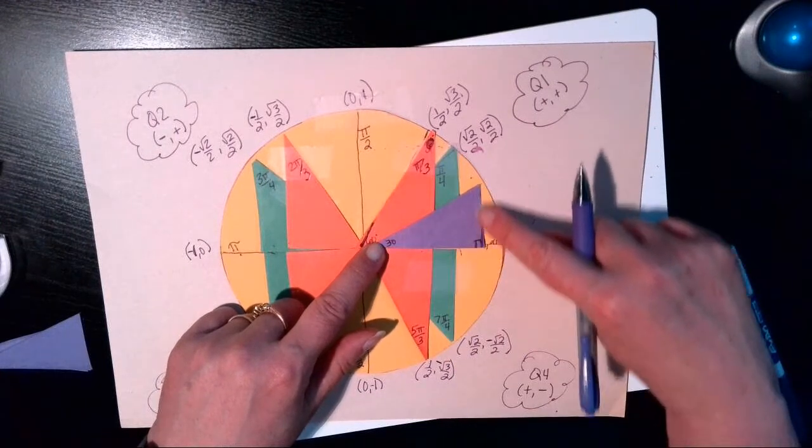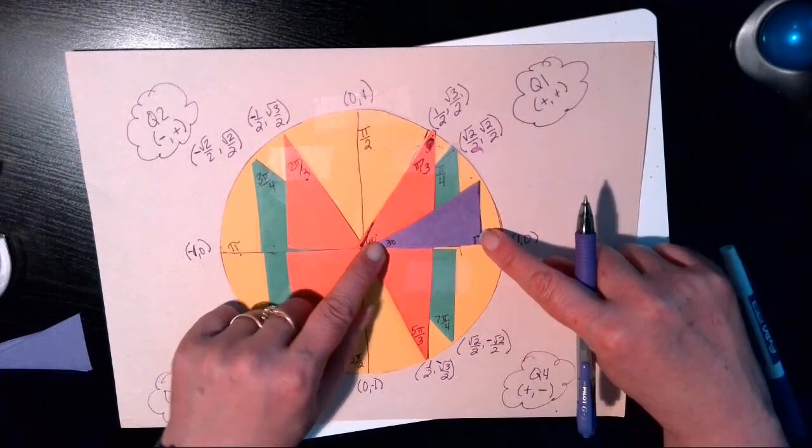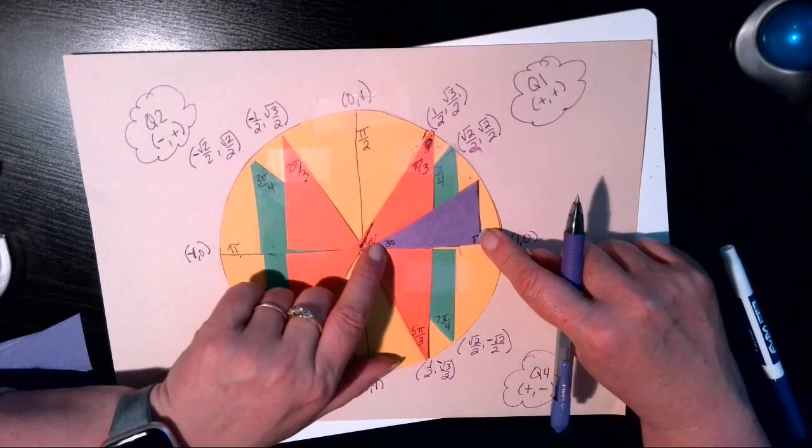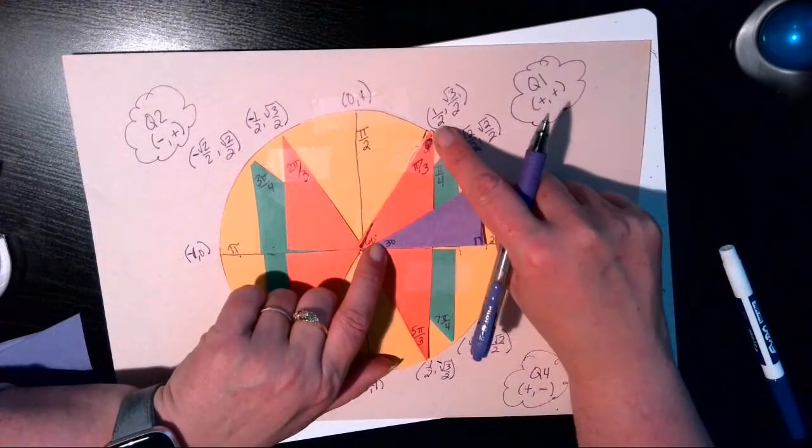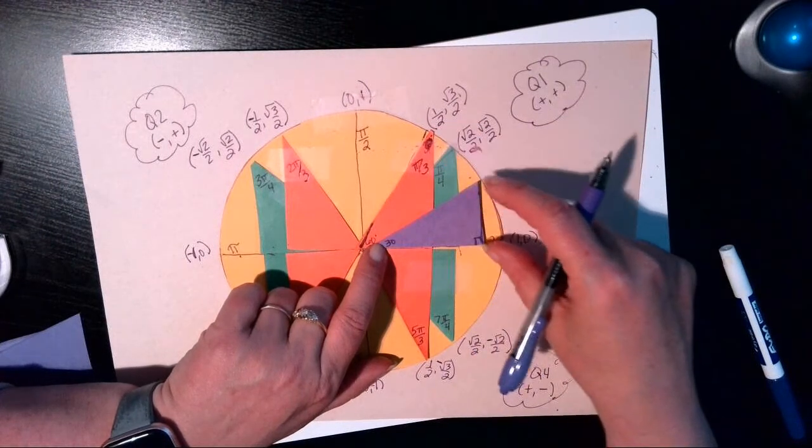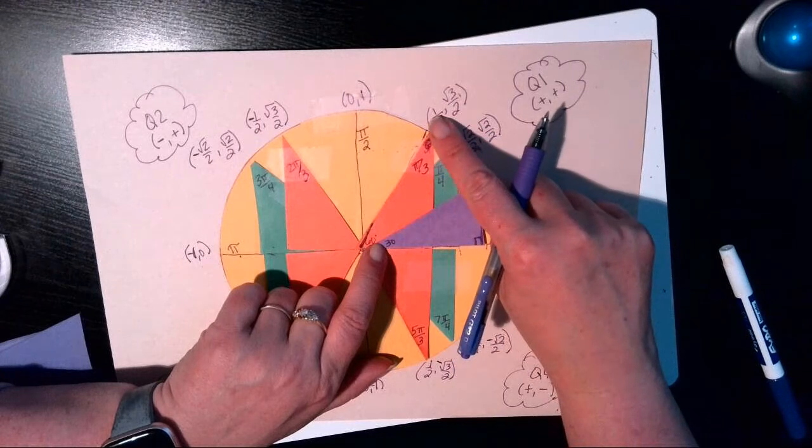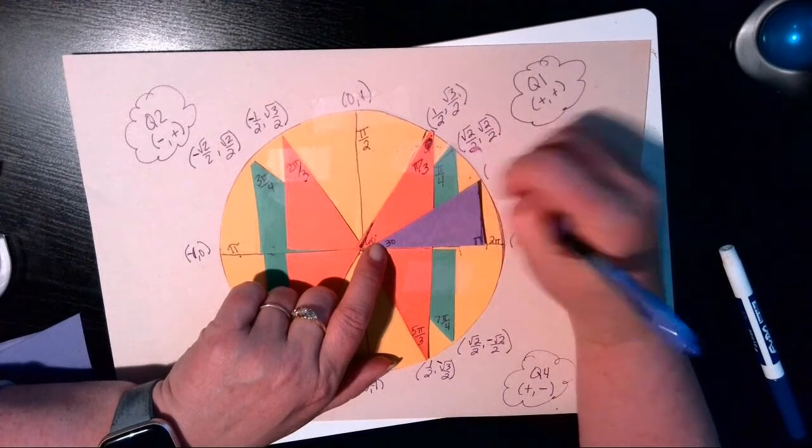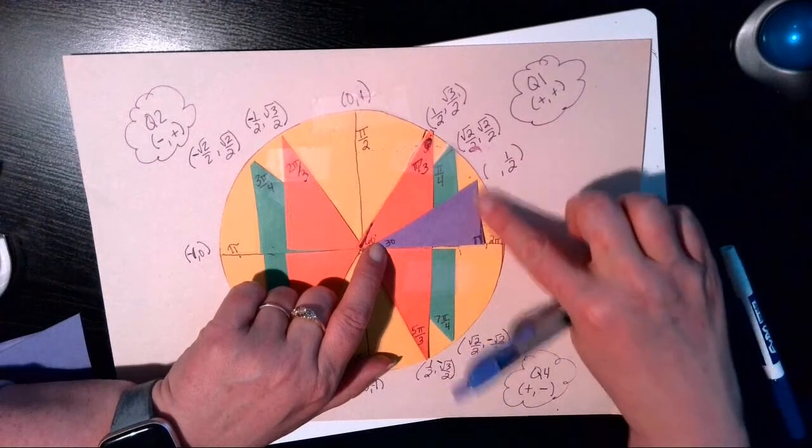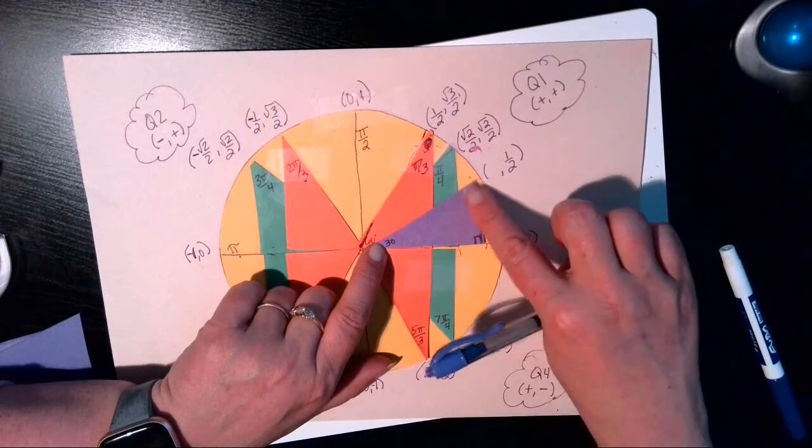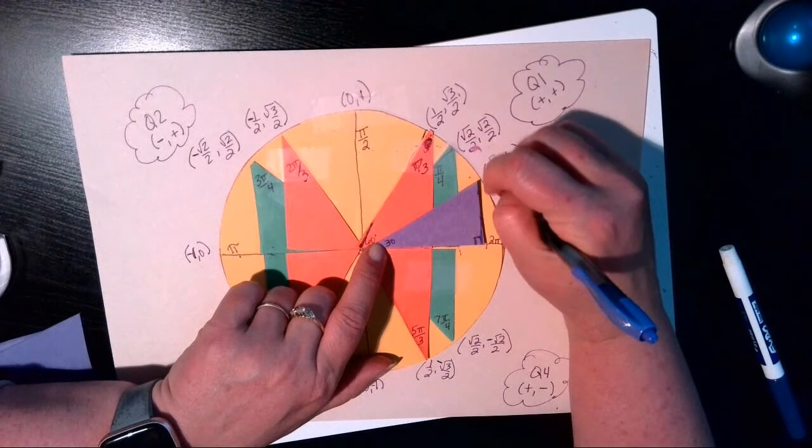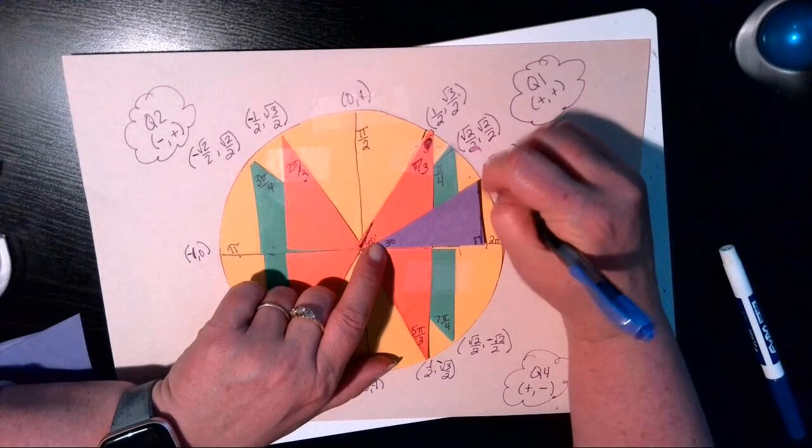So this is our shorter side, which is great news because now we don't have to use that 30-60-90 rule again. We're going to have the same outcome as we did for the orange, only the short side now is the y value, the one half, instead of the x value. So this coordinate is going to have a one half for the y value because up and down is our shorter side. The longer side across from the 60 degree angle, that's root 3 over 2. And x and y are both positive in the first quadrant.